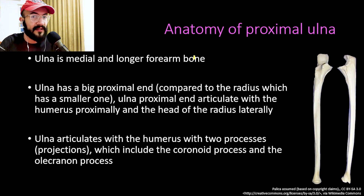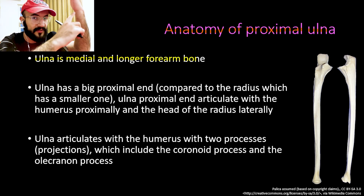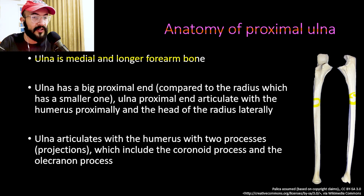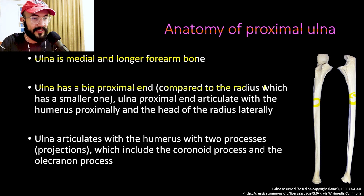To really understand olecranon process fractures, we first have to understand the anatomy of the proximal ulna. The ulna is the medial and longer forearm bone. You can see the ulna on these pictures — on the right picture we have a medial view, and on the left picture we have an anterior view. The ulna has a large proximal end compared to the radius, and this is the proximal end shown on those pictures.